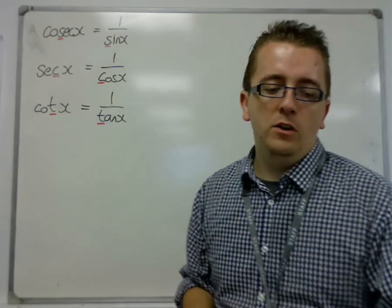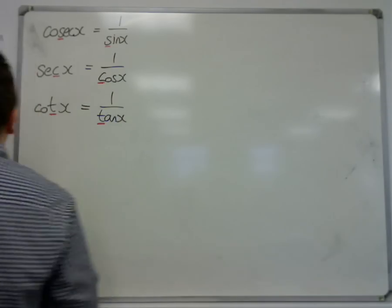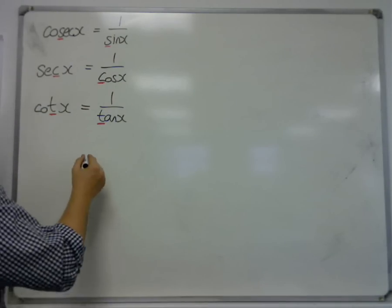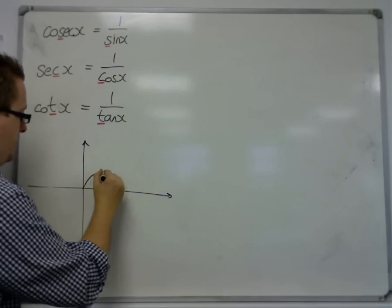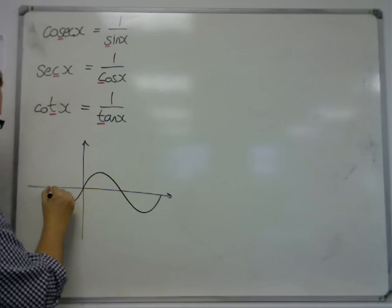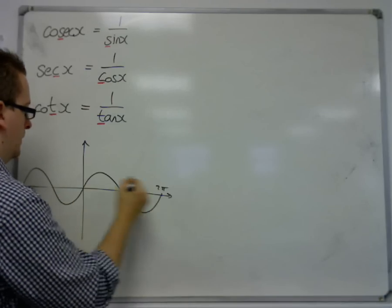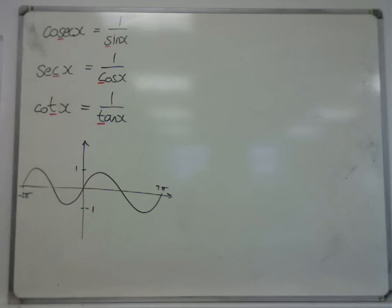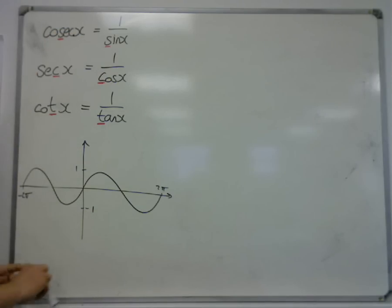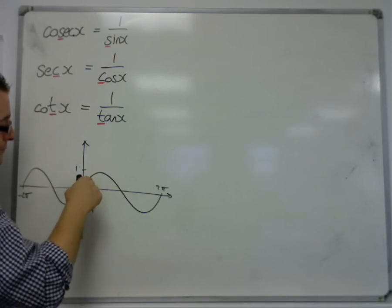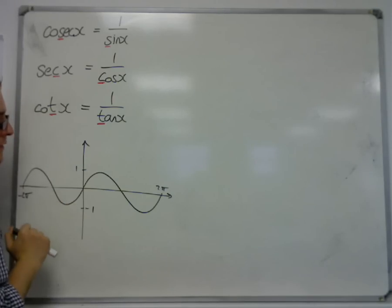We subsequently need to know what these curves look like. So if we start with cosec, let's begin with sine. So sine looks like this. Now, if you're doing 1 over sine, so that all of the values that you get on the y-axis here is 1 divided by that value,